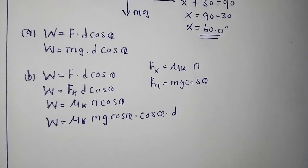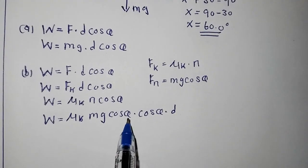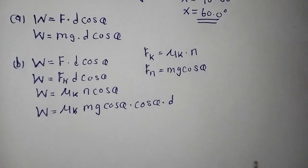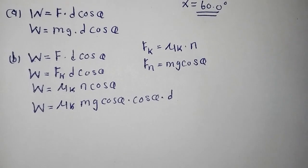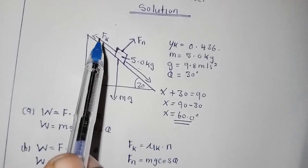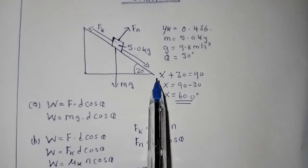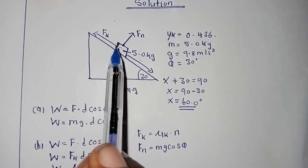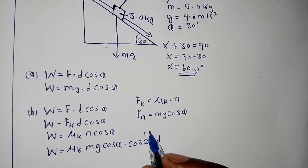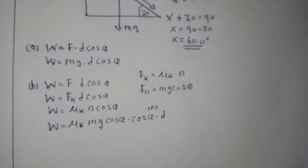For the friction work calculation, the angle in the normal force formula is 30 degrees. However, the theta in the work formula is different — because the friction force acts opposite to the direction of motion, it acts along a straight line of 180 degrees. So we place 180 degrees for that theta, and everything else stays the same to find the answer.